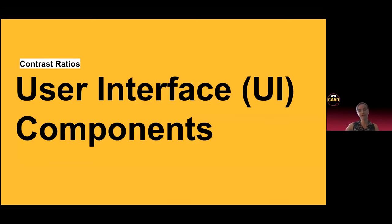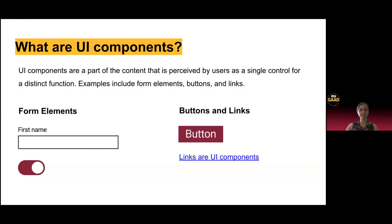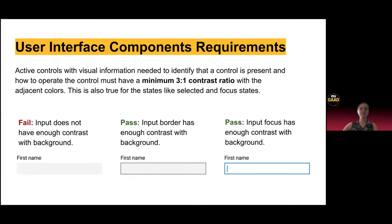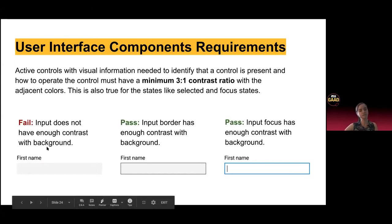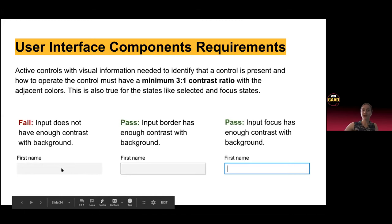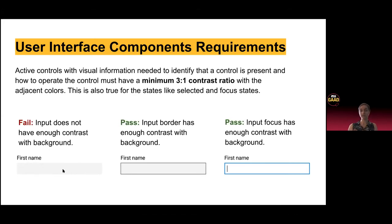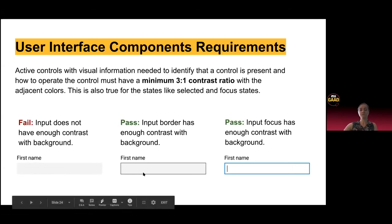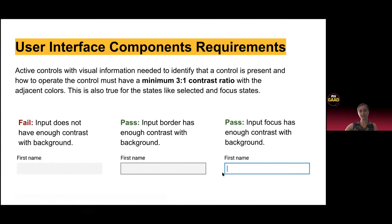Contrast ratios with user interface or UI components. UI components are content perceived by users as a single control for a distinct function — examples include form elements, buttons, and links. User interface component requirements require a minimum 3 to 1 contrast ratio. For inputs like a first name input box, this would not pass contrast ratio standards if it's a really light gray and doesn't meet that 3 to 1 standard. So test the border color and the background color. This is also true for focus and selected states — they also need to pass the contrast ratio standards.